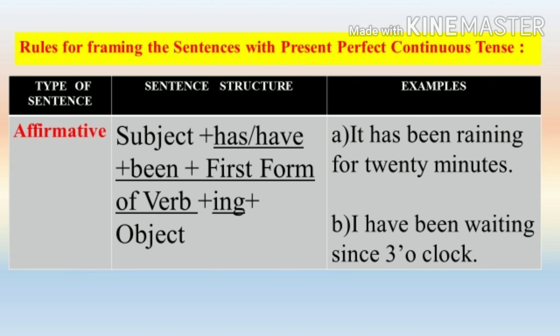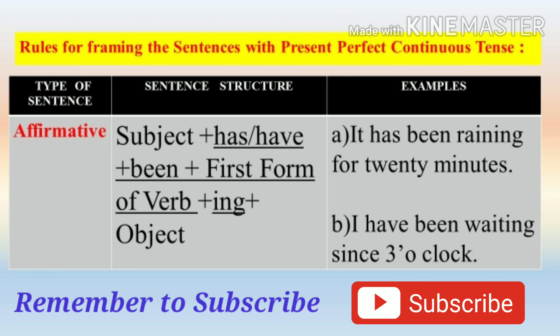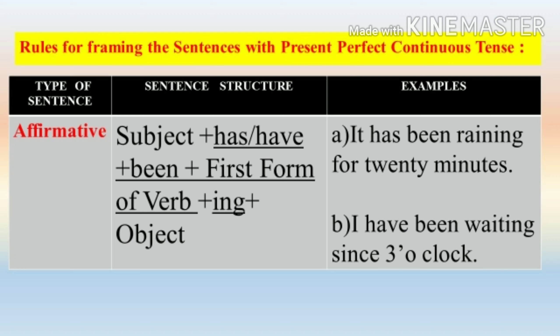Let us understand this with the help of examples. 'It has been raining for 20 minutes.' 'I have been waiting since 3 o'clock.' Friends, I hope you remember that we use has with singular subjects and have with plural subjects.